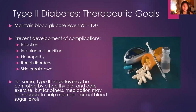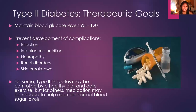Here are some therapeutic goals for type 2 diabetes. Of course, maintain blood glucose levels within 90 to 120. Prevent development of complications such as infection, imbalanced nutrition, neuropathy, renal disorders, or skin breakdown. For some, type 2 diabetes may be easily controlled by a healthy diet and daily exercise, but for others, medication may be needed to help maintain normal blood sugar levels.